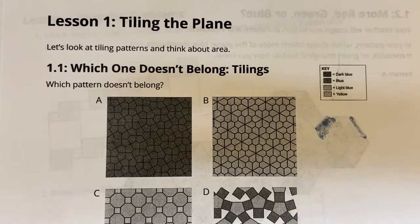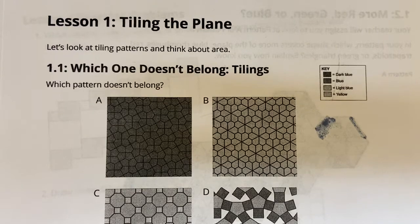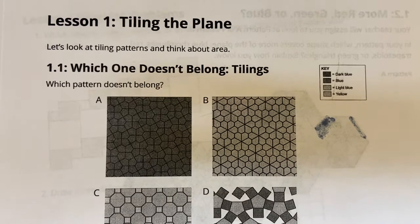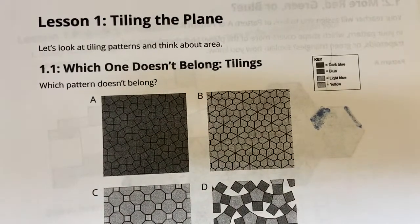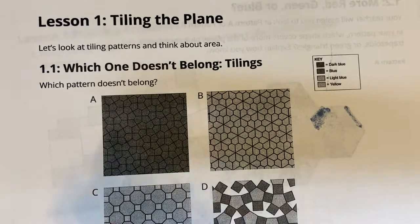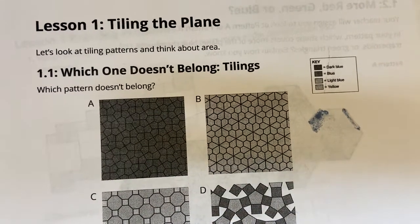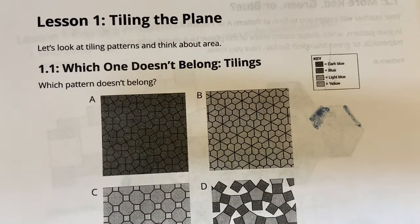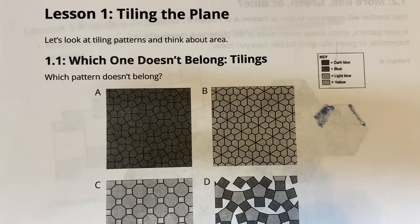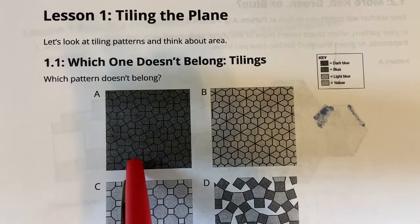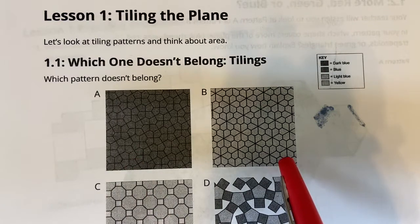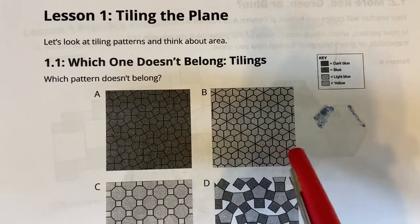So this one is just asking us which one doesn't belong. If I look at the tiles — A, B, C, D — they're all different patterns and different types of shapes. A lot of them have five-sided shapes; this is a five-sided shape, and this is also a five-sided shape if I look at it.